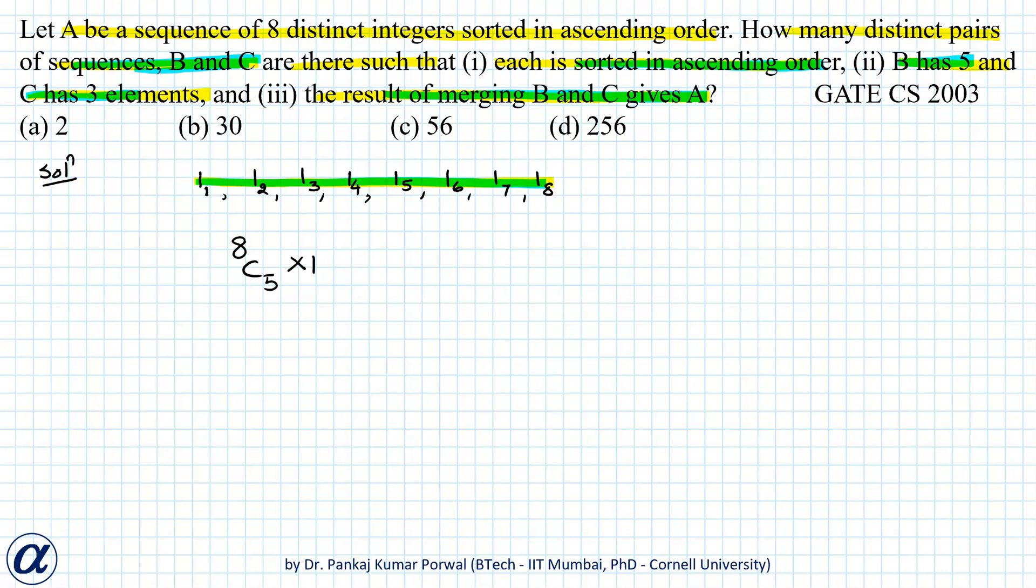So the number of ways of selecting distinct pairs of sequences B and C will be just 8C5 into 1. And when I simplify this, I get that 8C5 will be equals to 8C3, and that can be written as 8 into 7 into 6 divided by 1 into 2 into 3.